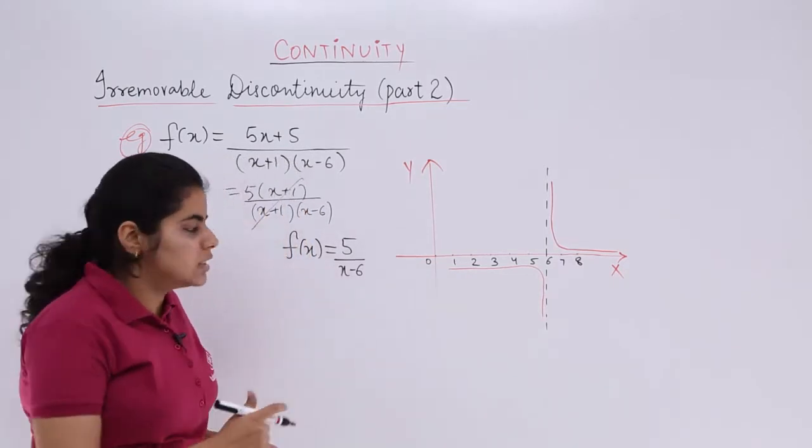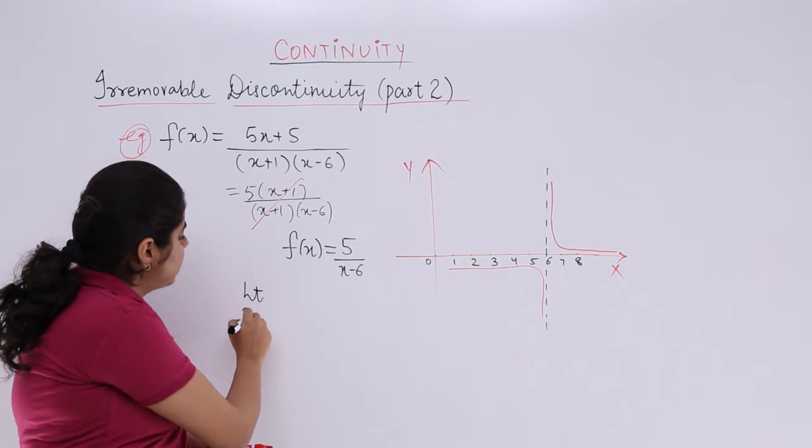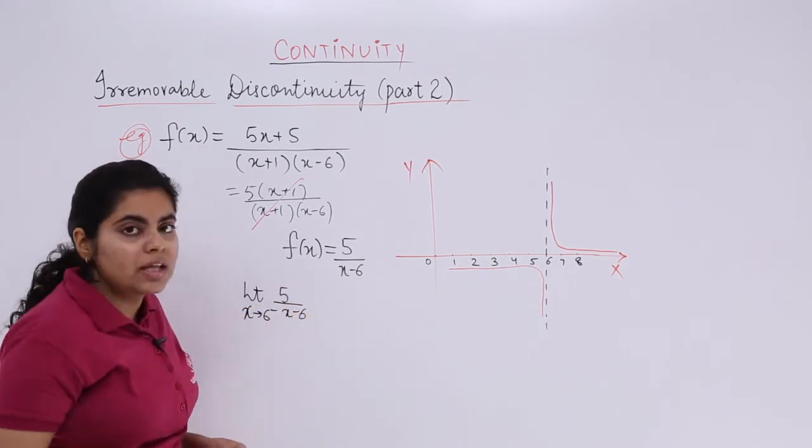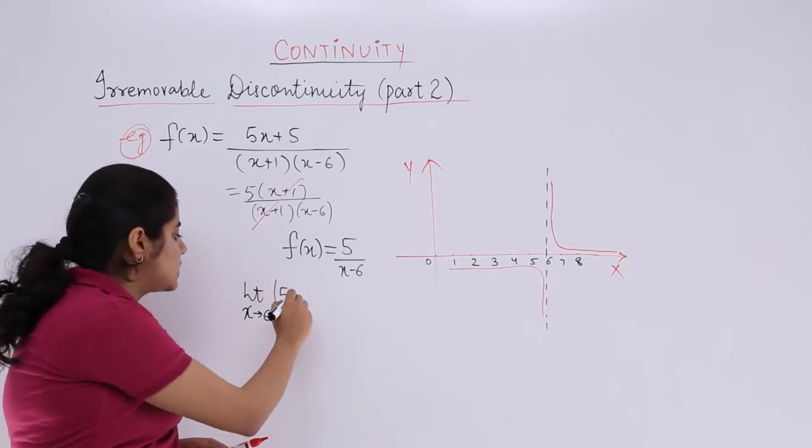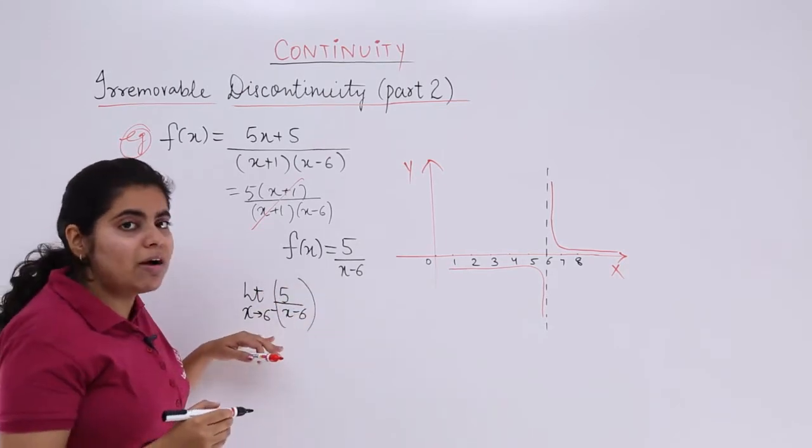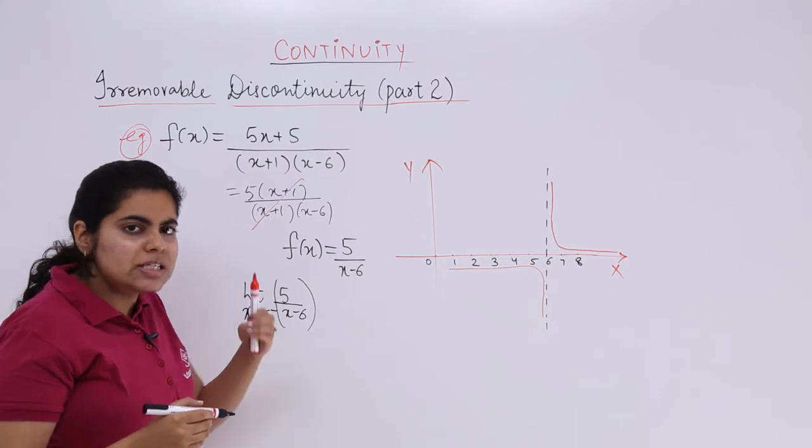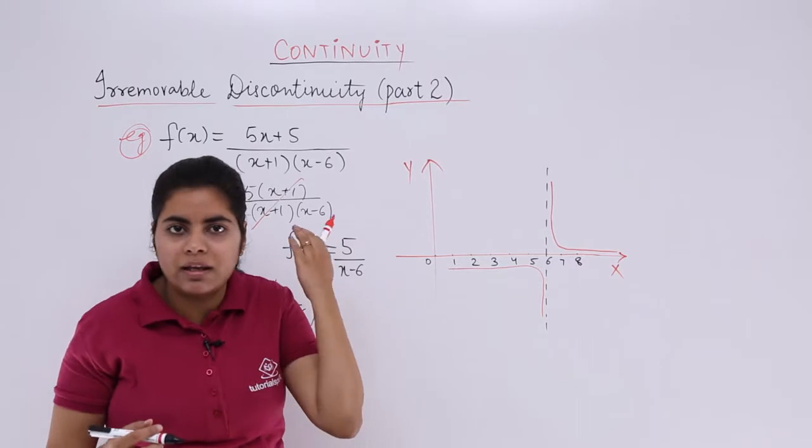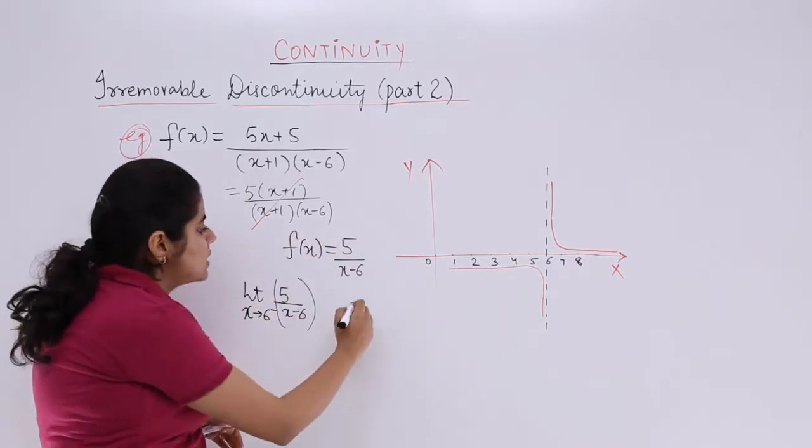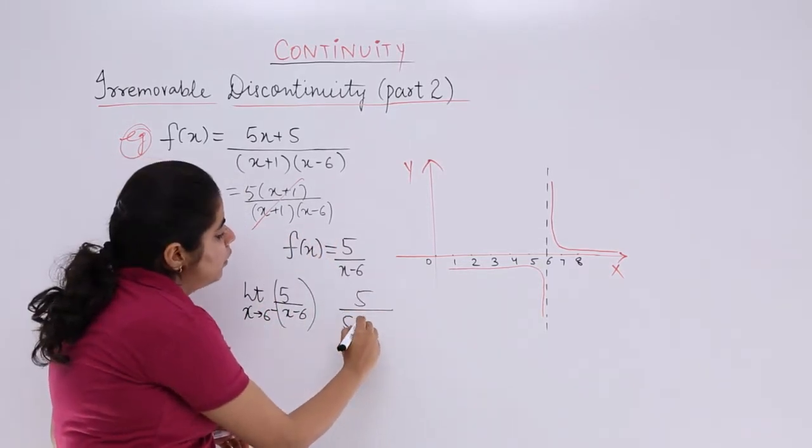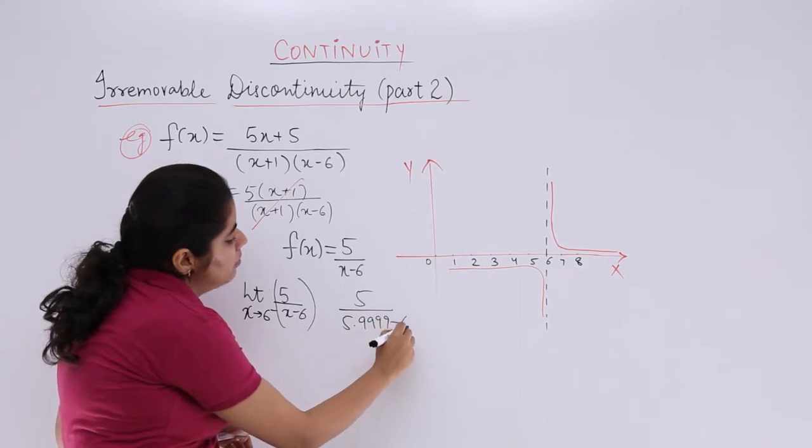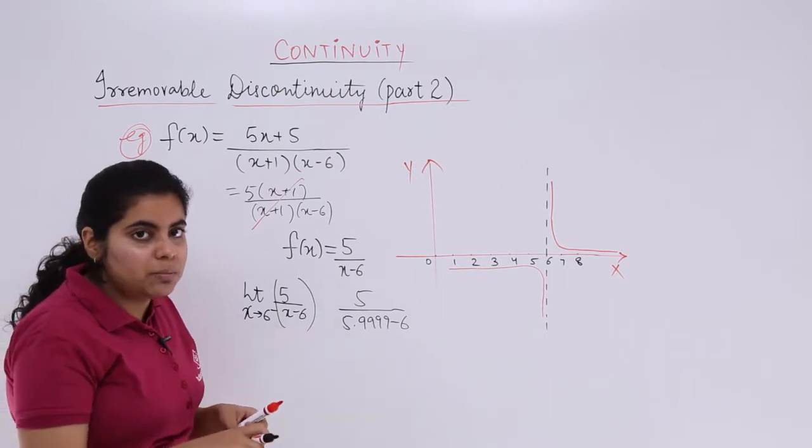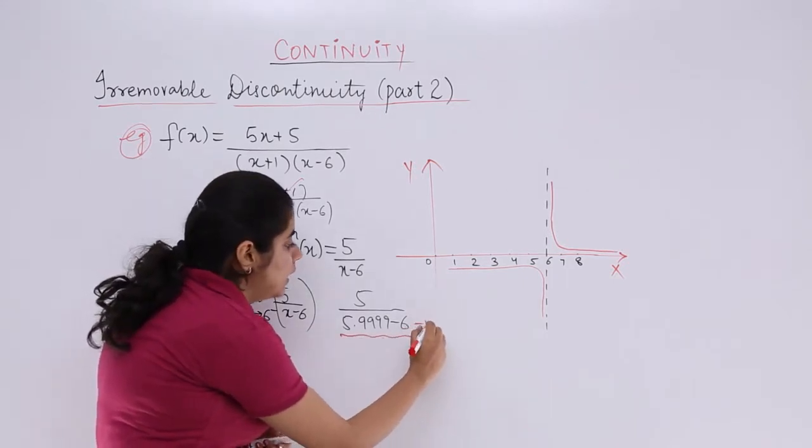But what about the limit? If I say limit x tends to 6 negative and I have the function. When it is 6 negative, that means you have to take a value which is slightly less than 6. Slightly less than 6 means maybe 5.999. If I suppose take 5 / (5.9999 - 6), this is what the function says. The value, whatever less it may be, but it will still be negative.